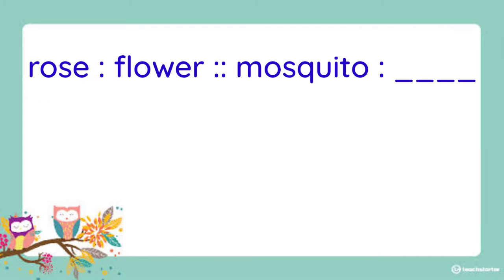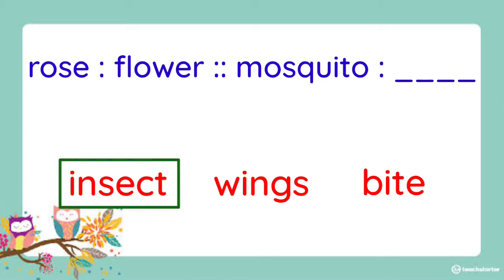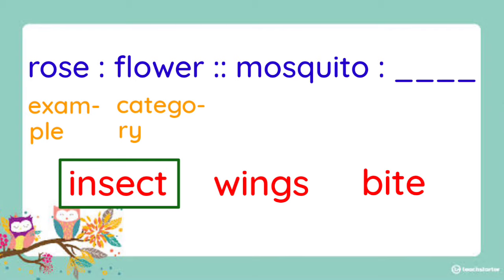Next. Rose is to flower as mosquito is to blank. Is it insect, wings, or bite? The answer is insect. Because for the first pair, we can say that rose is an example of a flower, which is the category. So we have to think of the category for mosquito — it is an example of insect.